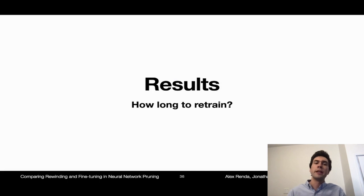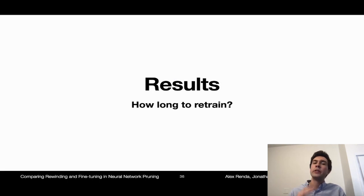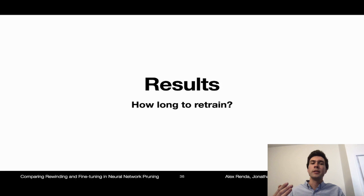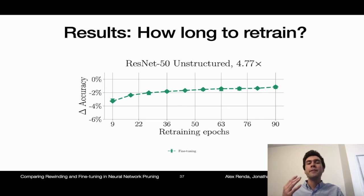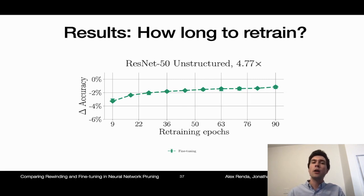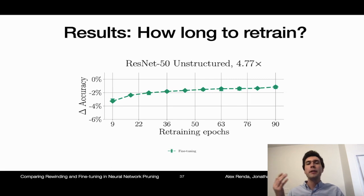Let's talk about the results of our comparison. The first question is: how long should we retrain for with each retraining technique, and how sensitive are the techniques to this choice? It's important to remember that for rewinding, the retraining time actually determines where to rewind to — when you retrain for t epochs with rewinding, you rewind to t epochs before the end of training. So for rewinding, this is a really important choice that determines the entire behavior, and you can't just do early stopping like you might with fine-tuning. Let's look at fine-tuning on an ImageNet ResNet-50 pruned to about five times compression. The x-axis is the amount of time you fine-tune for, and the y-axis is the resulting loss in accuracy compared to the original full network, so up is better. As you might expect, fine-tuning for longer gives you better accuracy.